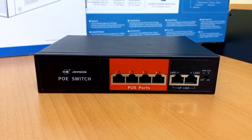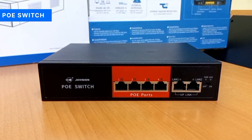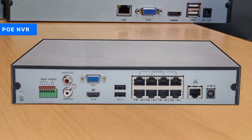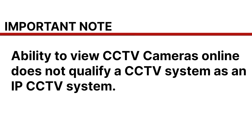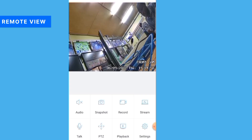IP cameras, on the other hand, are either powered through a separate Power over Ethernet switch or they are powered through NVRs with Power over Ethernet ports created on them. Please note that the fact that you can view your CCTV camera system online does not make it an IP system. In fact, both systems — IP CCTV or AHD CCTV — can be viewed online or on any mobile device when the right settings are in place.